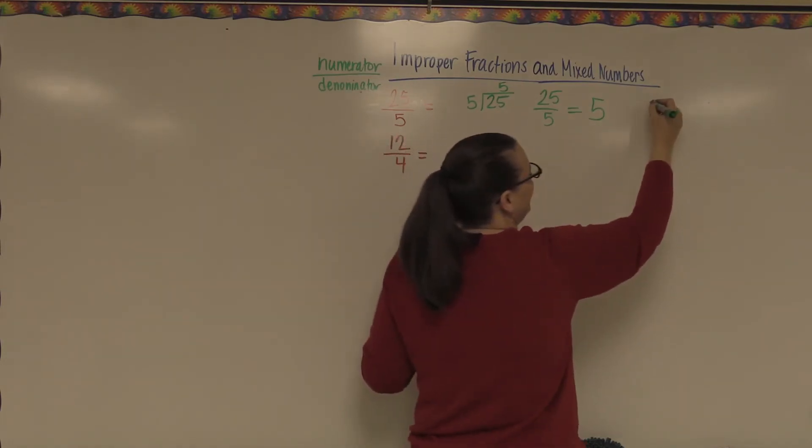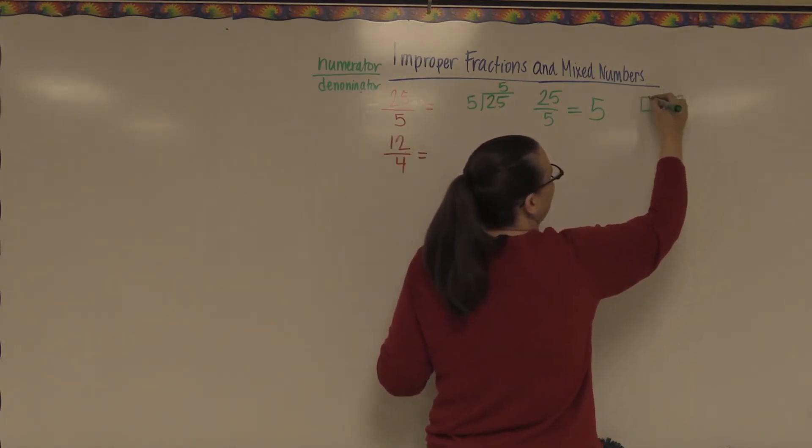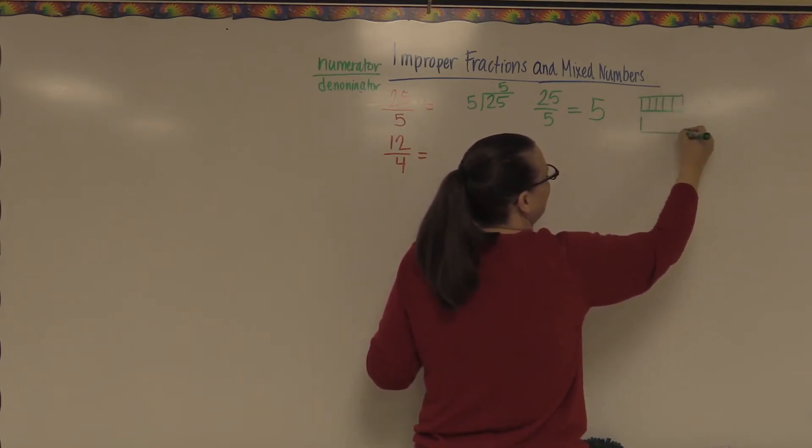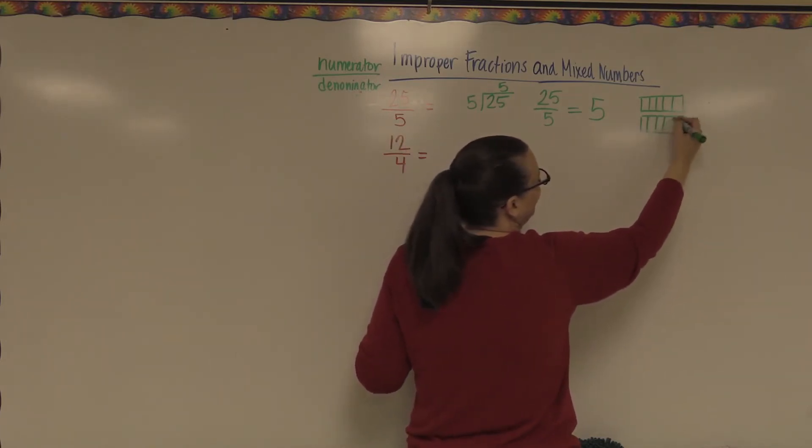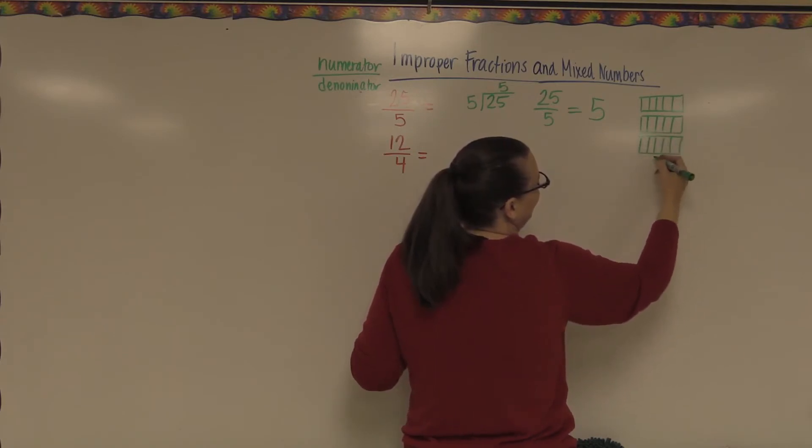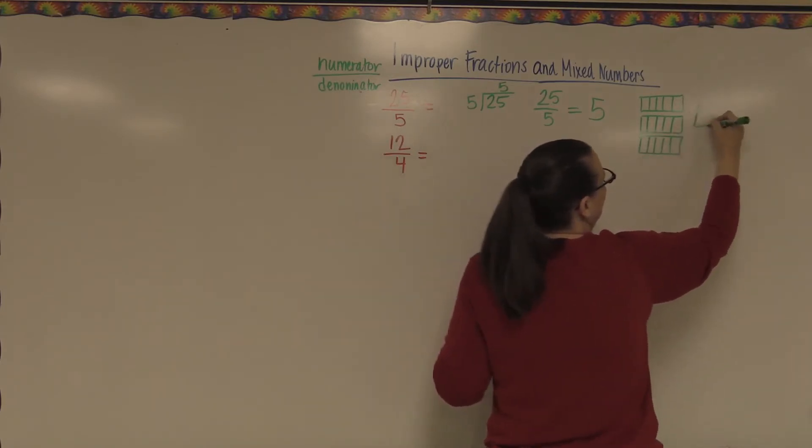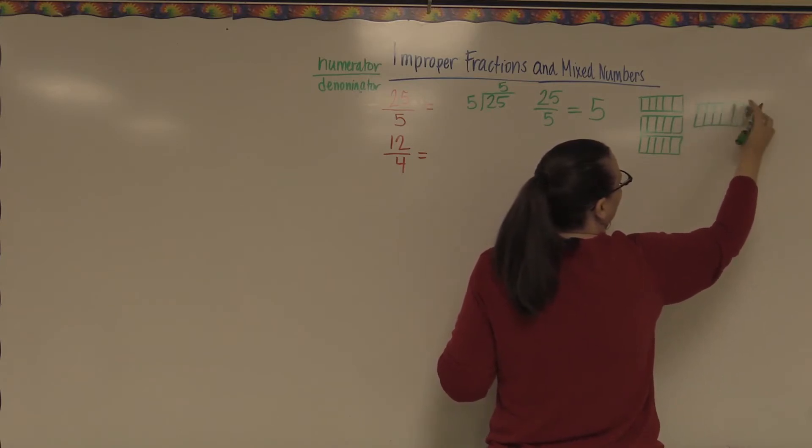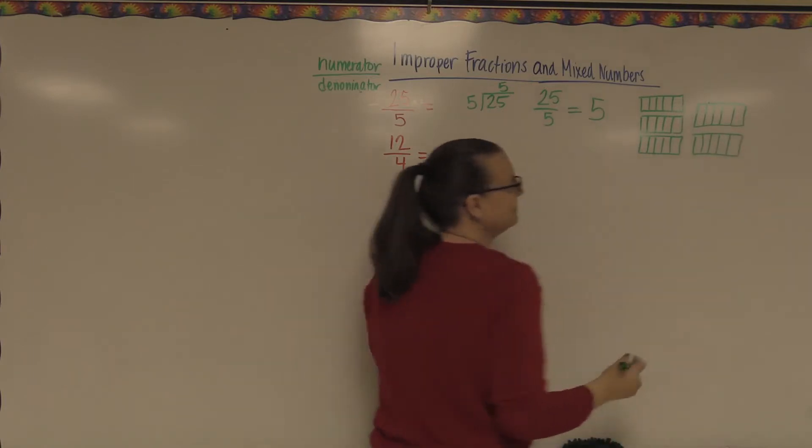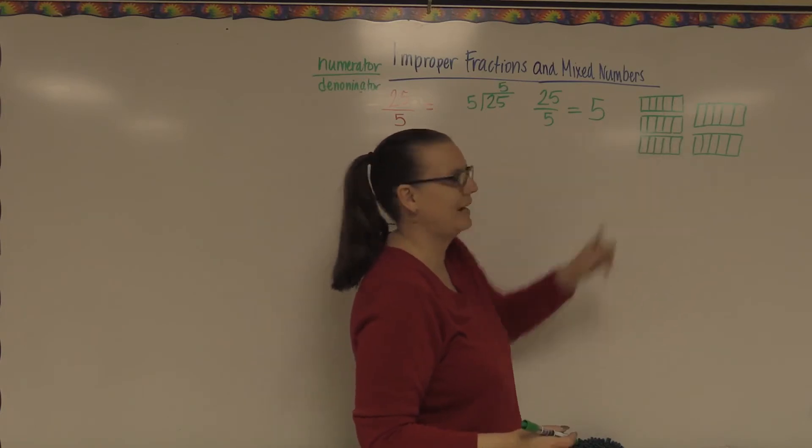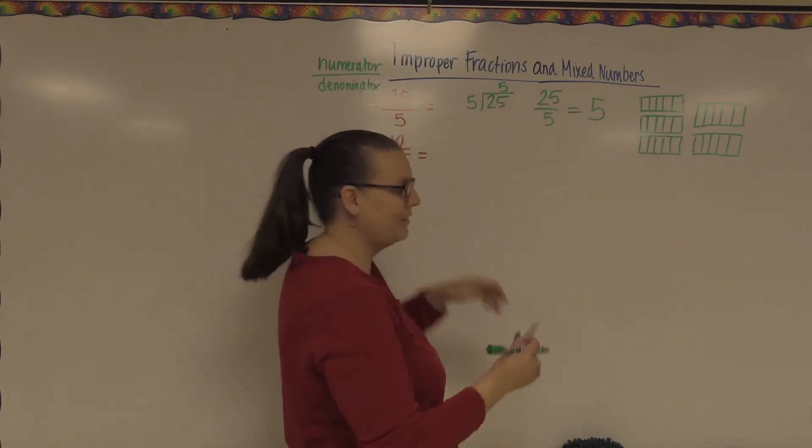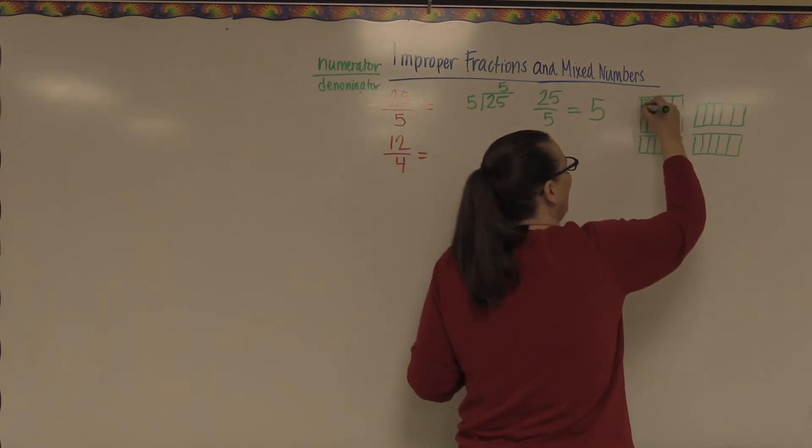Pretend that I have something like a chocolate bar and it's split up into five pieces. That's the denominator of my fraction over here. I have 25 pieces, so I have to make sure I have enough space for those 25 pieces. So you see each one of my wholes has five pieces in it. All together, I have 25 pieces, so I have all of this.